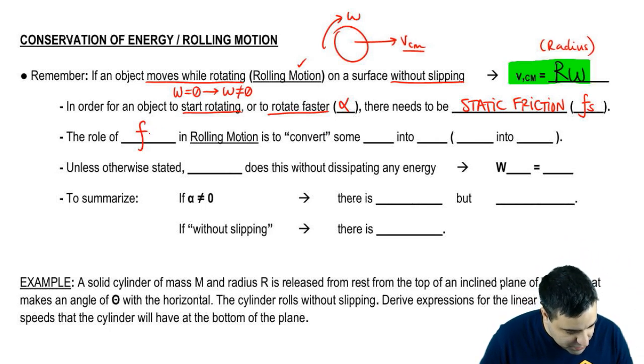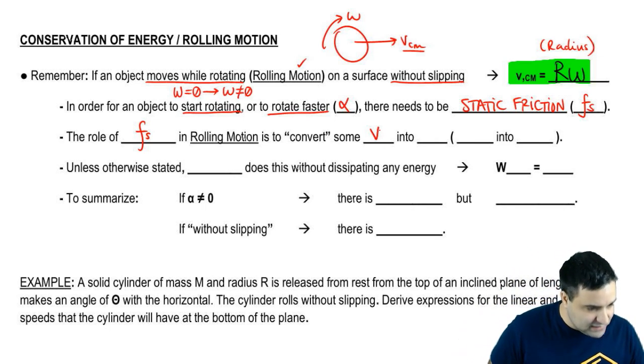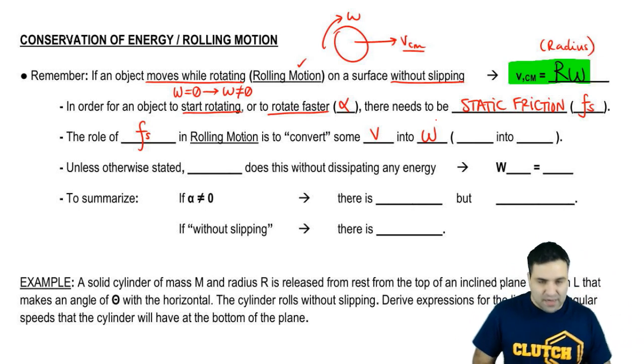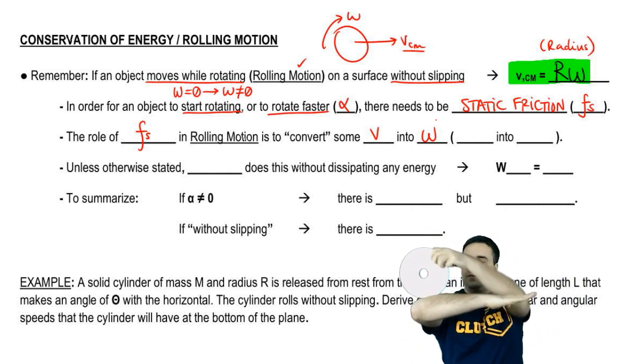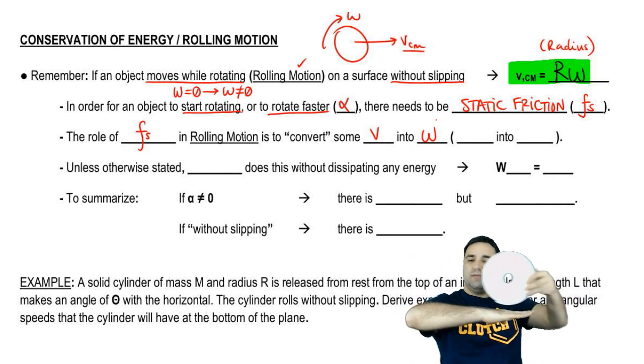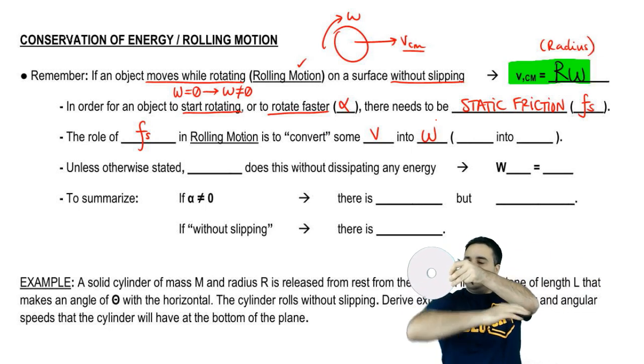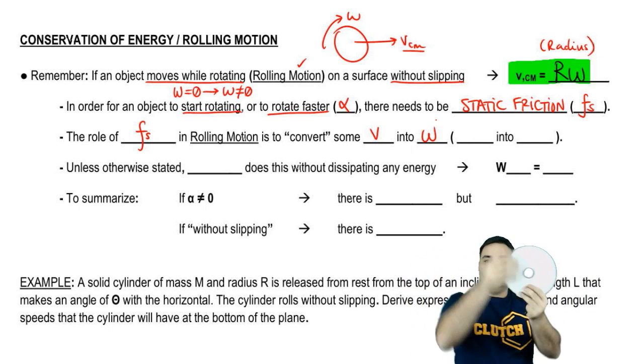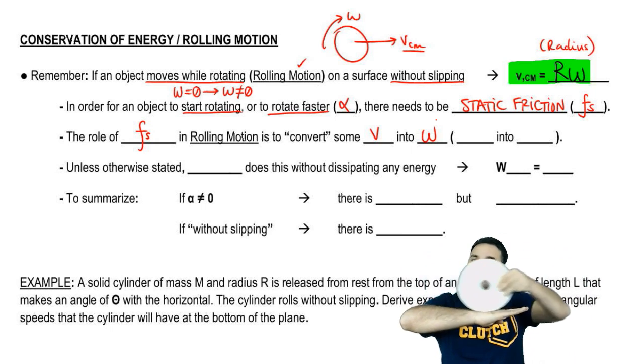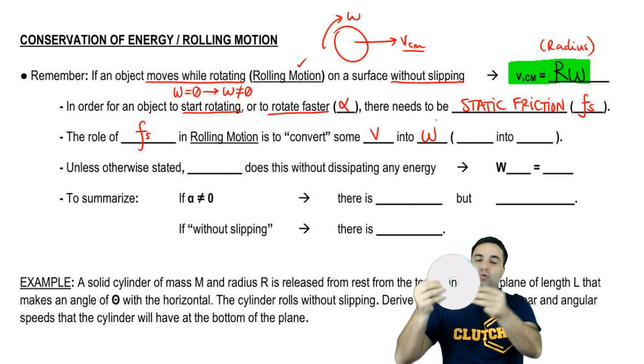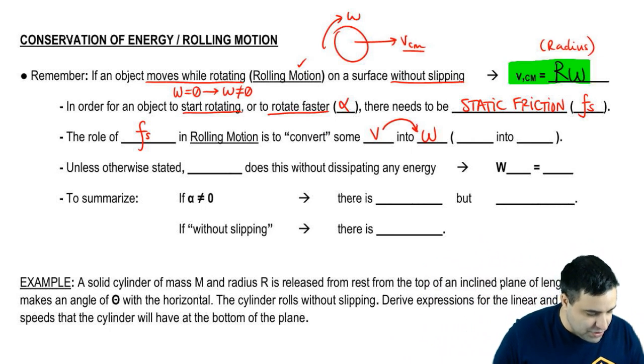Now, the role of static friction in rolling motion, what it's doing is essentially converting some of your velocity into omega. If you have this guy and there's no friction, it's going to move on a surface like this. Notice that I'm not rolling it. What friction does is it gets some of this V here and starts to turn it into rotation. If this was completely frictionless ice and you threw a disc, it wouldn't roll, it would just go like this. But friction is what causes it to roll at the same time.